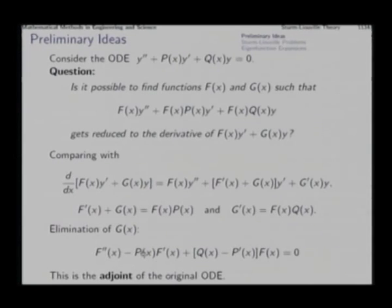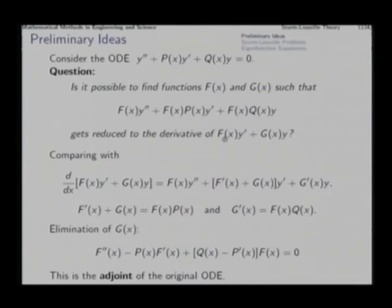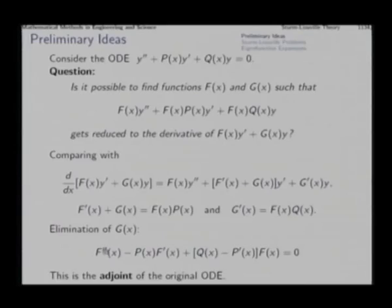This means it is possible to find f(x) and g(x) such that f times the original ODE turns out to be the exact derivative of an expression like this, if f(x) satisfies this resulting equation. This is again a second order differential equation in f of the same type as the original. This differential equation is called the adjoint of the original differential equation.